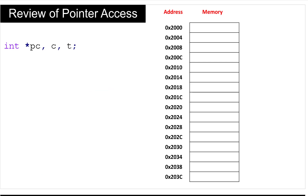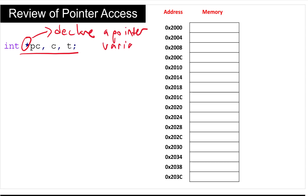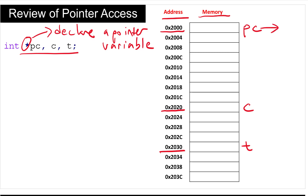Here we have a declaration of three integer variables: PC, C, and T. Before the variable PC, we have a star sign which specifies that PC is a pointer. When we say it's a pointer, it means this variable is holding an address of another variable. On the right hand side, we have our memory and the addresses of each location. Our pointer variable currently does not point to anything.